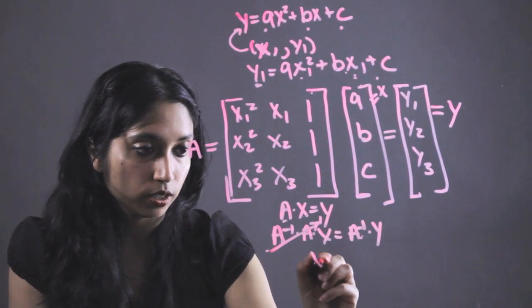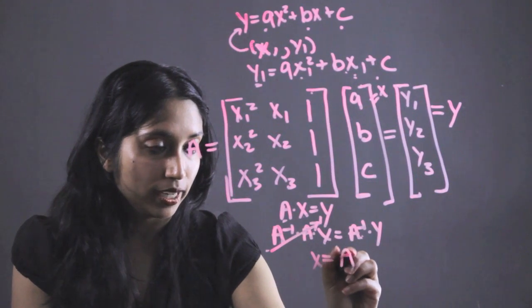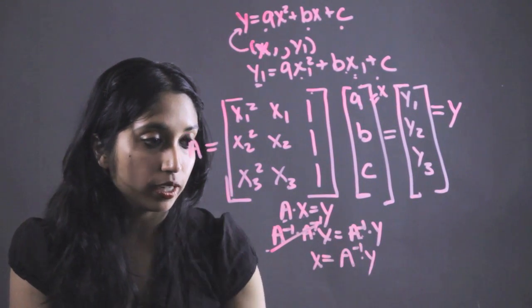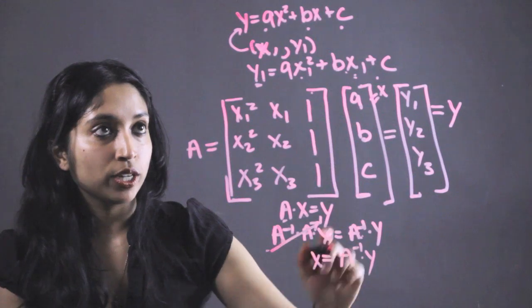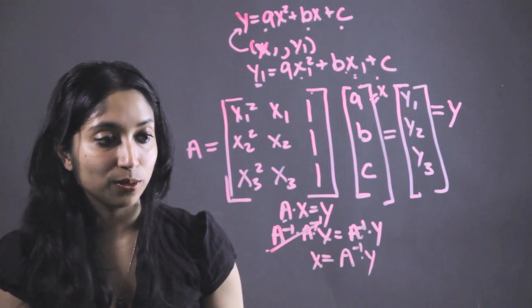Nothing changes, that goes to 1. Now we have X equals A inverse times Y. There you go. Solve for the three equations, plug them back in, you got your quadratic equation.